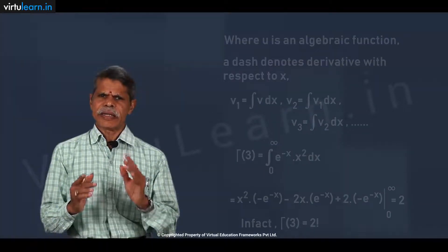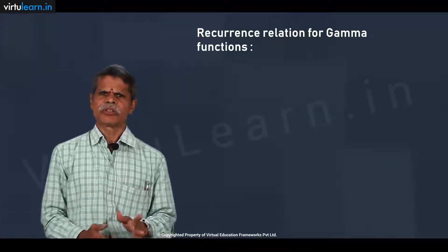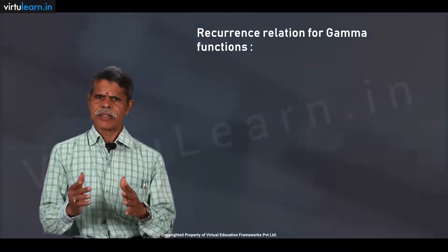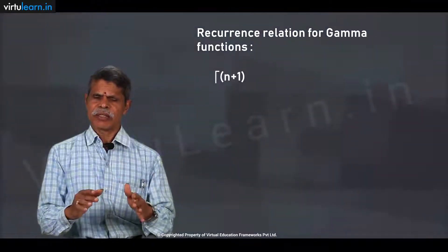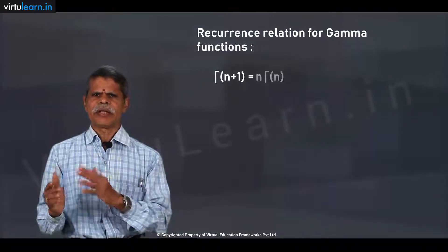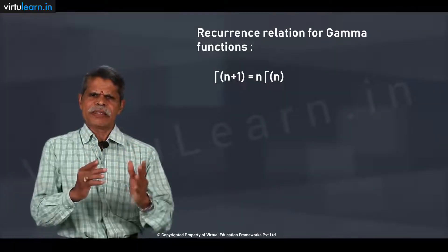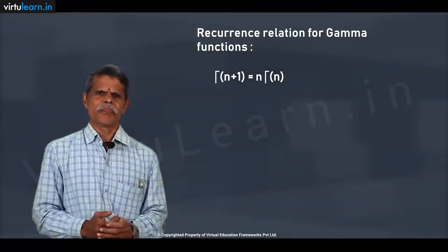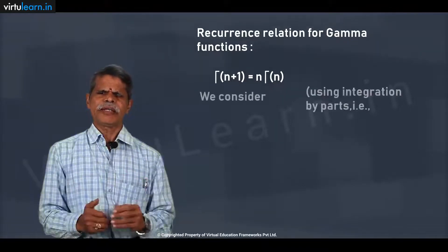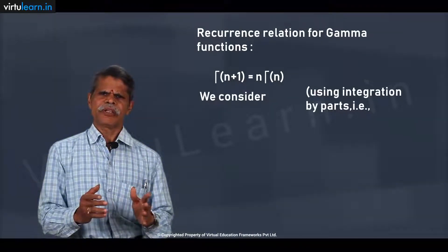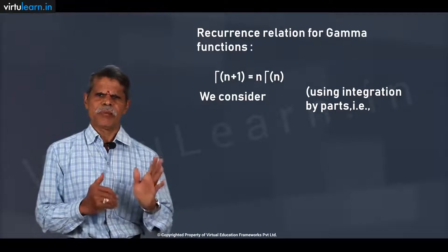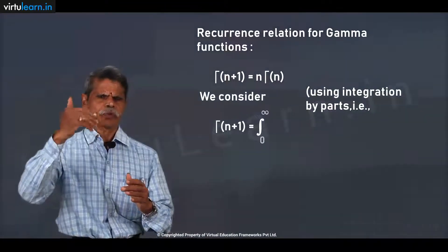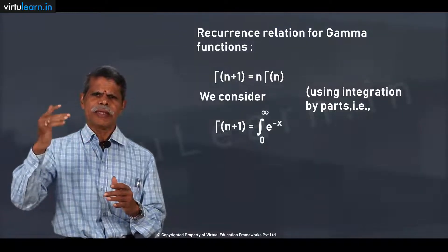Let us now derive a recurrence relation for the Gamma function. The recurrence relation states that Gamma(n+1) = n · Gamma(n). We start with the definition for Gamma(n+1), which is the integral from 0 to infinity of e^(−x) · x^n dx.